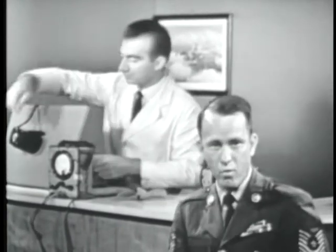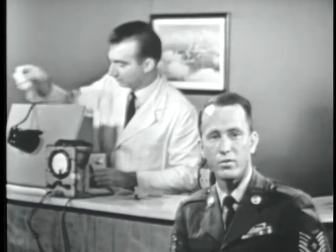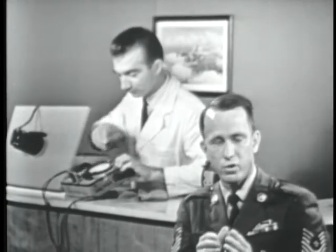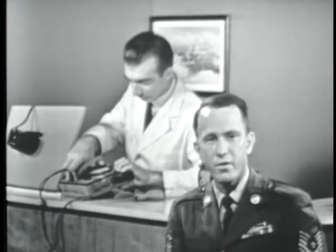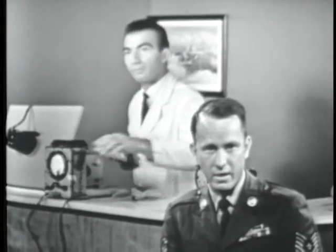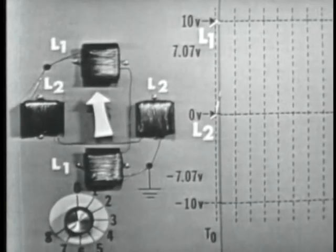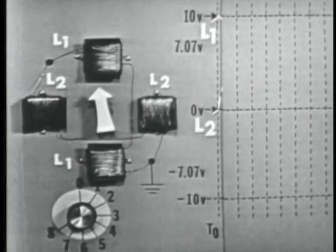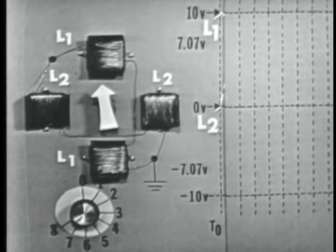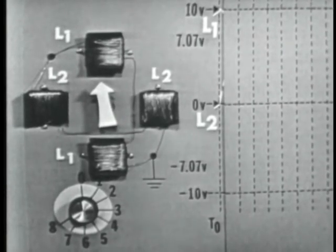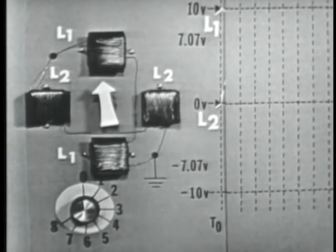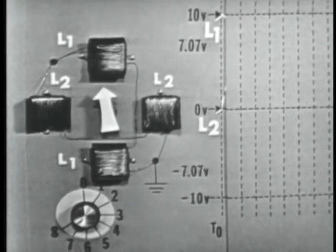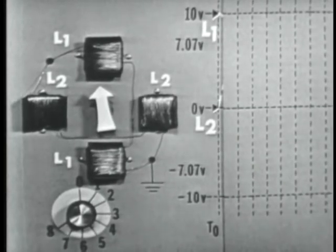There are two major points to understand about how the induction motor operates. First, we must have a rotating magnetic field produced by the stator windings. Second, we must cause the rotor to become an electromagnet. These four coils represent the stator windings of the induction motor — made from a deflection yoke from an old television set. The stator windings in the induction motor are not made exactly like this, but the magnetic field produced is essentially the same.